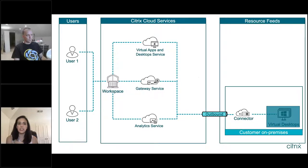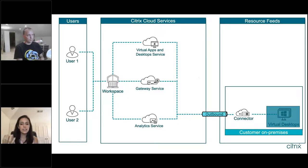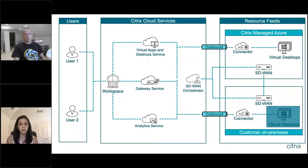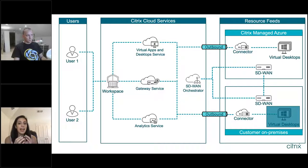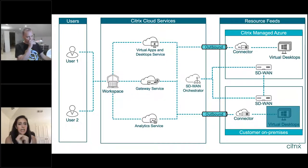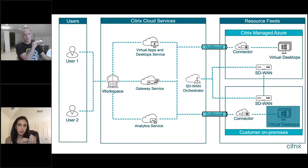Another use case is seasonal workers — if you have interns only in your company for two months, it probably doesn't make sense to have a full on-prem infrastructure to support all of them. That's where bursting to the cloud comes in. You're able to burst to the cloud and provide those additional resources, which can be spun up in Citrix Managed Azure. The cool thing is that you can prioritize on-premises resources first, and once those become overloaded, that's when you burst to the cloud. A key component of this is Citrix SD-WAN, which facilitates those cloud resources being able to communicate with and have access to your on-premises environment — for things like file servers or app data that lives on-premises.